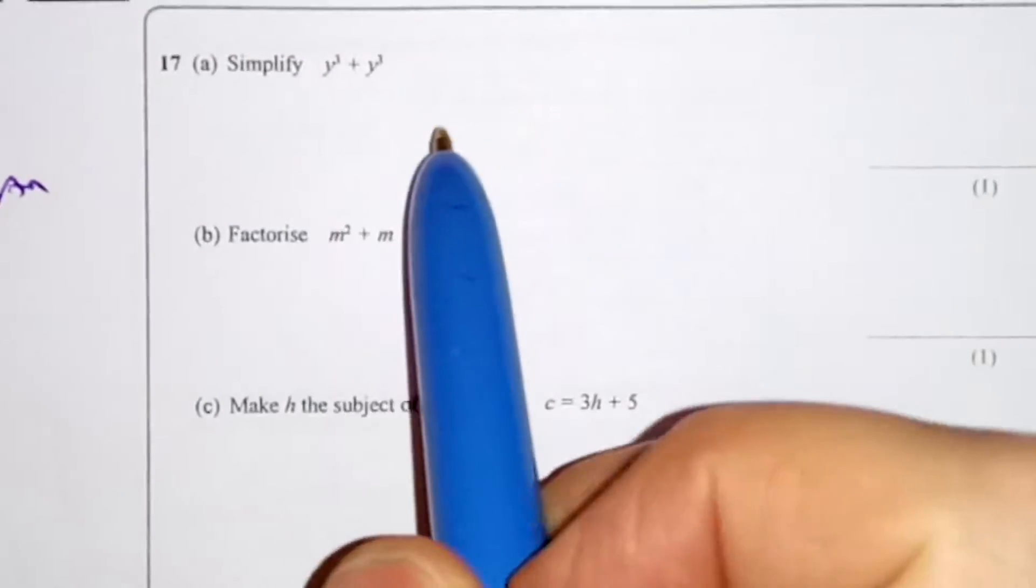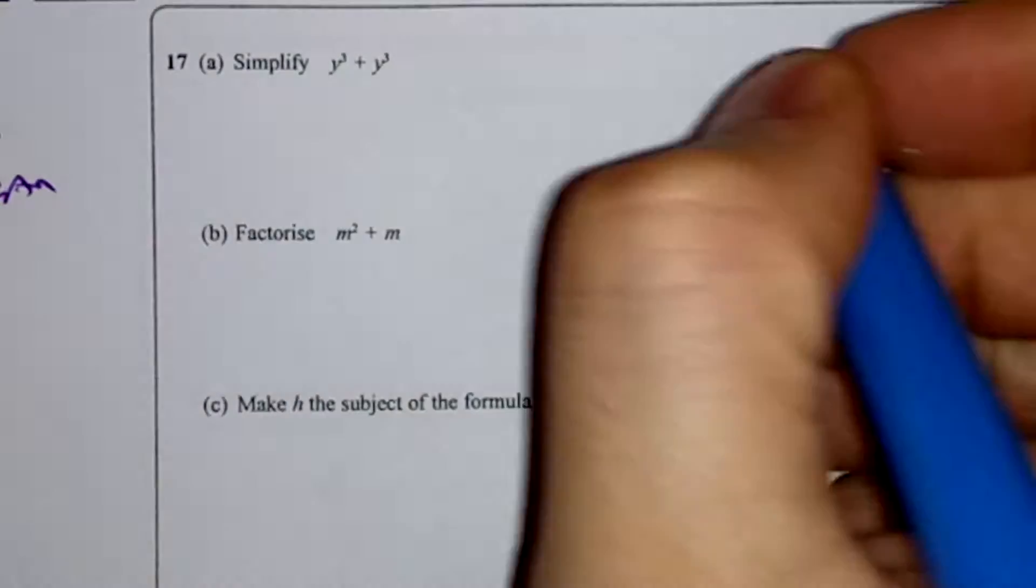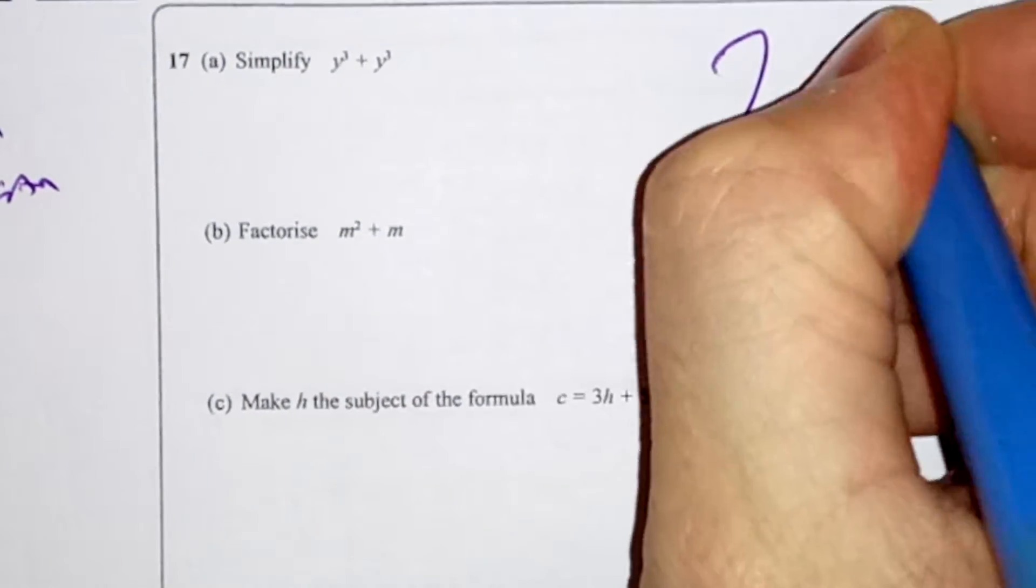This is y cubed plus y cubed. How many y cubes have I got? It's 2, so it's 2y cubed.